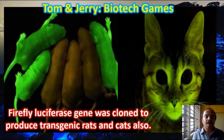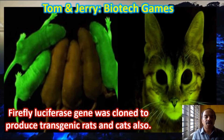Here, rats have been cloned with the luciferase gene. On the left side you can see three rats glowing in a fluorescent green color — these are the cloned ones — while the black-colored ones are not cloned. This was achieved by scientists at the Indian Institute of Science in Bangalore. One year later, even a cat was cloned with the same gene, so you can have both glowing rats and glowing cats — a real-life glowing Tom and Jerry.